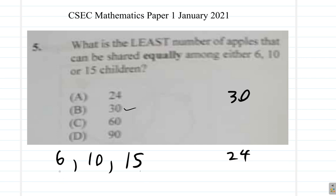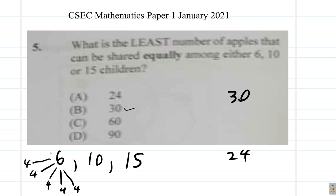If you try 24 with 6 children, you could give four each — four to each of the six children. Each gets four apples equally. Would it work with 10 children?